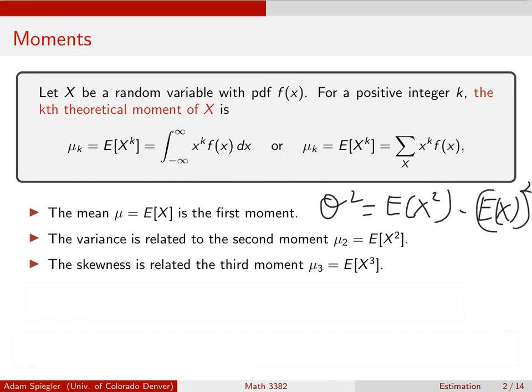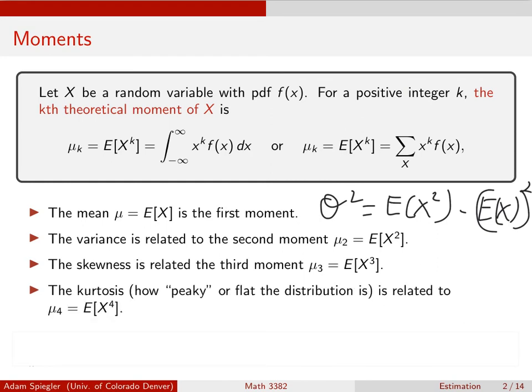And so on. You could look at the fourth moment which is related to what's called the kurtosis of a distribution, and this is telling us how peaky a distribution is. By that, just informally what we mean is if a distribution is approximately normal then its kurtosis would be zero. If a distribution is more peaky than a normal distribution it has a positive kurtosis. And if a distribution is less peaky than a normal distribution, so say it looks like this, that would have a negative kurtosis.